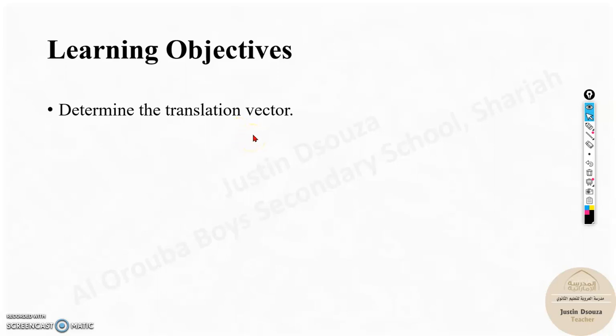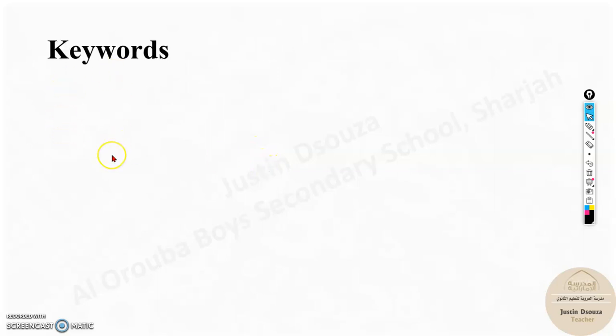Here there is only one objective: to determine translation vector. In simple words, translation means moving from one place to another. Now we will see keywords, it's translation and magnitude. We will see this in a while.